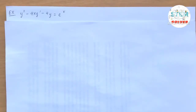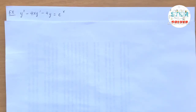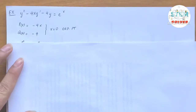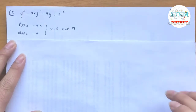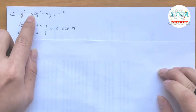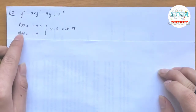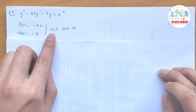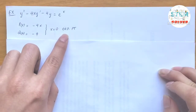We have a non-homogeneous differential equation: y double prime minus 4x y prime minus 4y equals e to the x. As usual, first let's find p(x) and q(x). So p(x) is equal to negative 4x, and q(x) is equal to negative 4. So x equals 0 is an ordinary point.